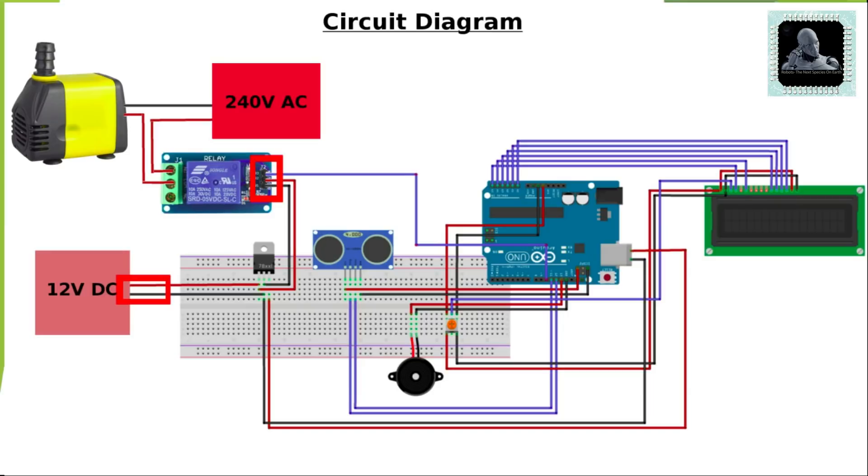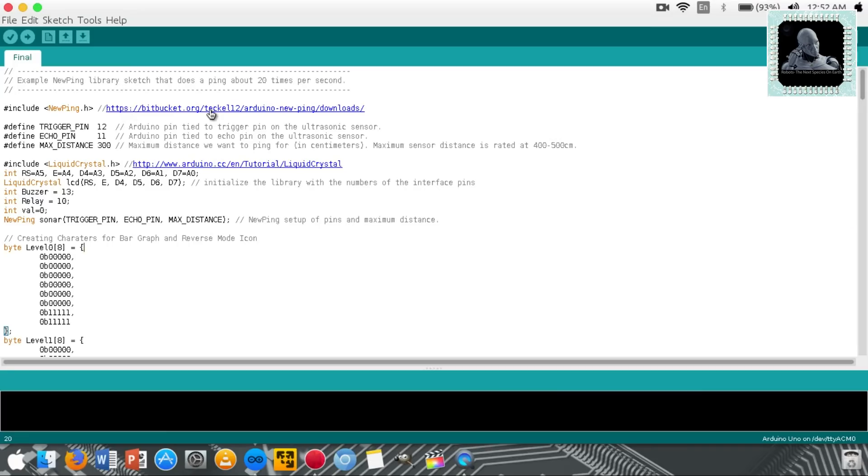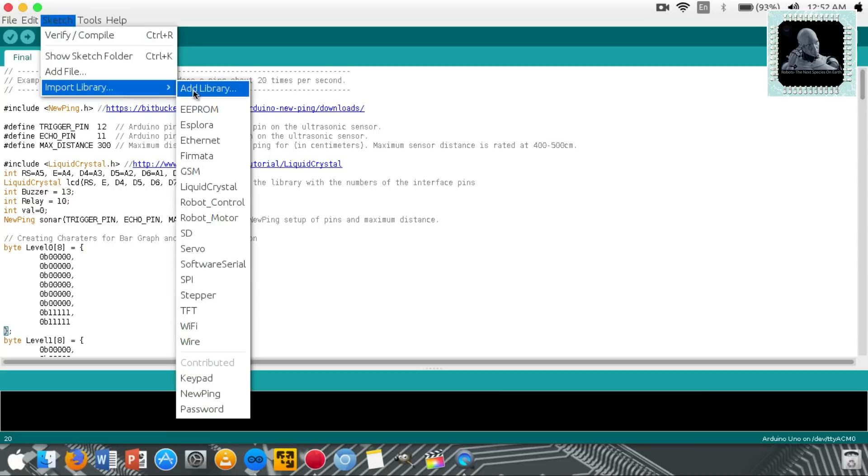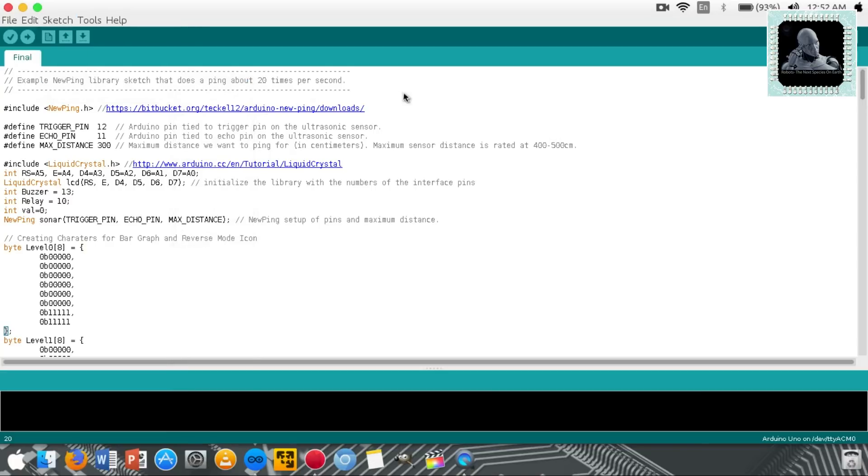Now we can move to the programming section. Make sure to download the NewPing library from the given link. This library will be downloaded in zip file. You can import this library to your Arduino software by going Sketch, Import Library, Add Library. For uploading the code connect Arduino to your computer using the USB cable and click on the upload button. This will upload the code to your Arduino. Visit link given in the below description to find the code. Now we can start assembling the circuit.